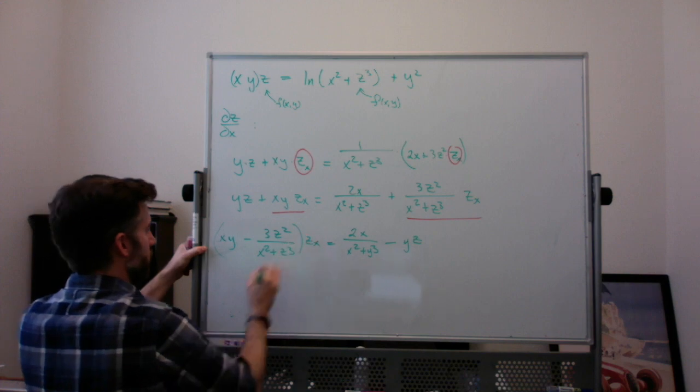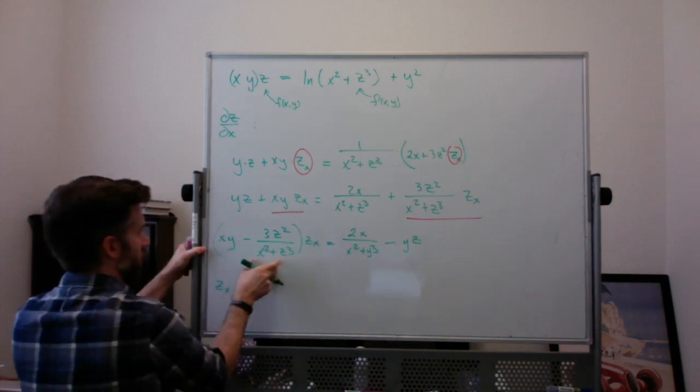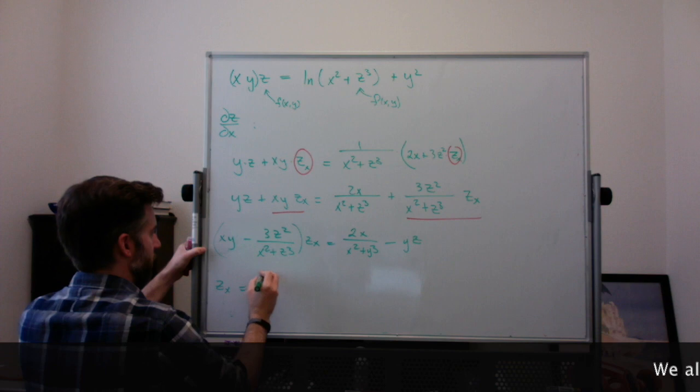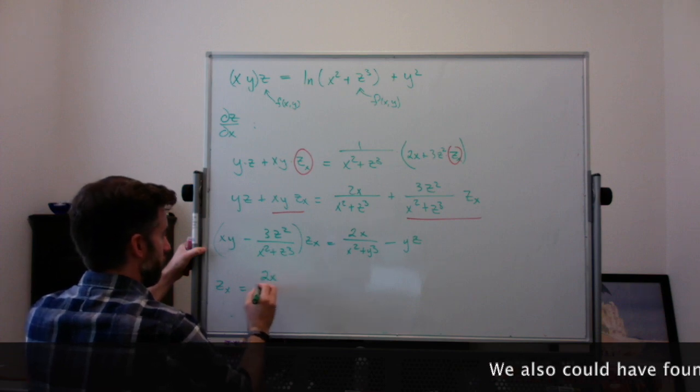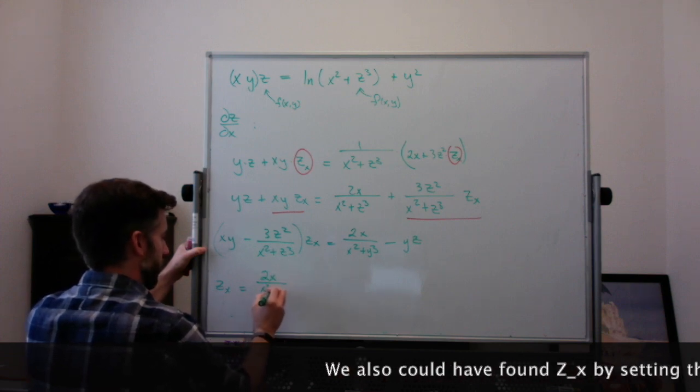Finally, solve for zx. So zx equals all this divided by all this. Yeah, and I think actually maybe multiplying by x² + y³ at the end here is going to be easier.